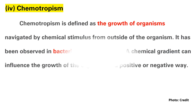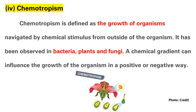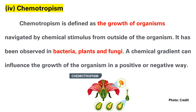Chemotropism is defined as the growth of an organism navigated by a chemical stimulant from outside the organism. This is especially observed during pollination, when the stigma secretes sugars and other nitrogen compounds that stimulate pollen tube growth. It has been observed in vascular plants and fungi.